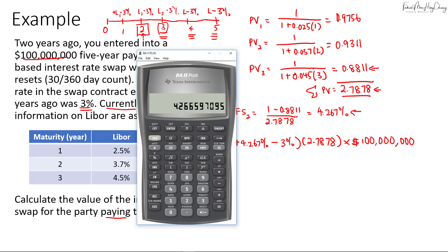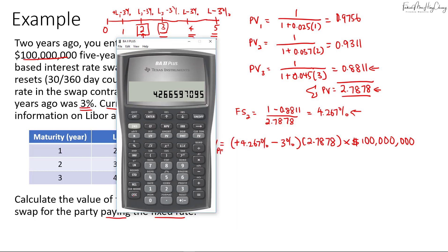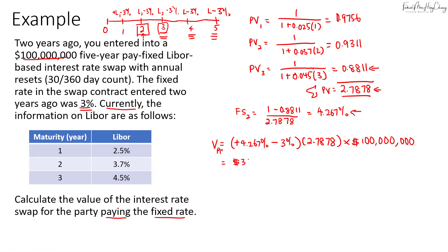All right, let's calculate. So there'll be 4.267% minus 3%, multiply by 2.7878, and then multiply by $100 million. So we get 3,532,143.